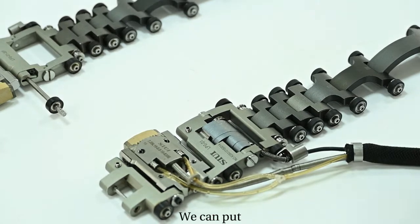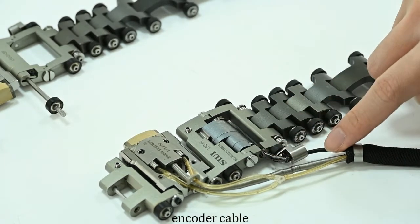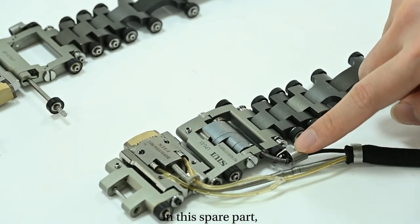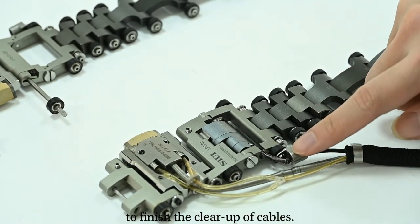We can put the encoder cable, probe cable, and pipe divider together in this part to organize all the cables.